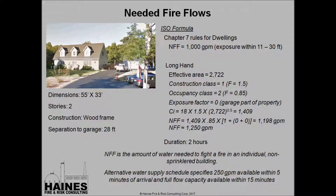The needed fire flow under ISO is the amount of water needed to fight a fire in an individual non-sprinkler building. The schedule assumes continuous water supply, but the alternative schedule looks for a two-hour duration for tanker shuttles and similar operations. The alternative water supply schedule specifies 250 GPM be available within five minutes of arrival, with flow capacity reaching its maximum within 15 minutes of the first piece of equipment arriving on scene.